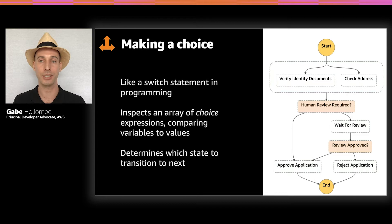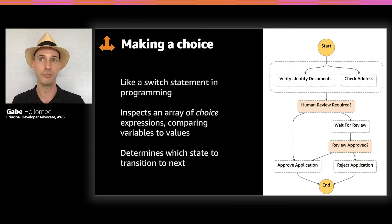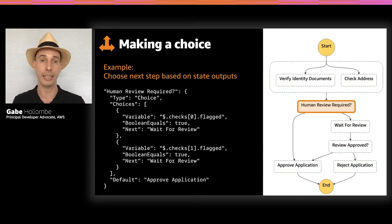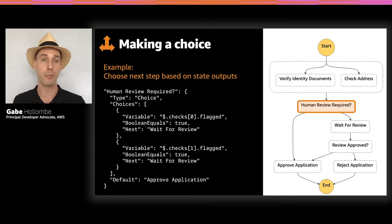Speaking of choice states — these are the two choice states in this flow. A choice state is like a switch statement in programming. It looks at an array of expressions and figures out which one matches; the first matching one tells it which state to transition to next. You can also specify a default value if none of your conditions match. Here's how we implement the human review required check: type is 'choice', and we pass an array of choices with expressions comparing values in our state. This basically says: if either element from our parallel checks for ID and address returns flag true, we'll go to wait for review; otherwise, we'll approve the application.